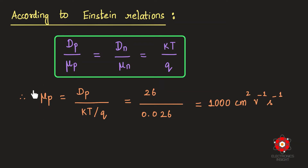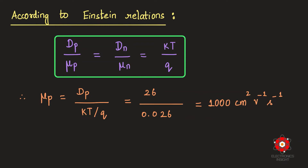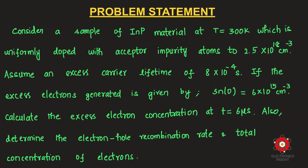Finally, we estimate the drift mobility. Since the problem deals with holes, we use Einstein's relation: Dp/μp = kT/q (the thermal voltage). At 300 K, kT/q is known. With Dp = 26 cm²/s, the hole drift mobility works out to 1000 centimeter square per volt per second.